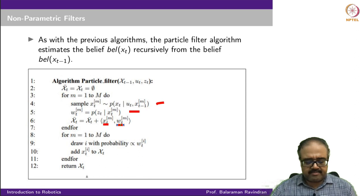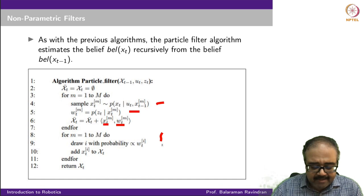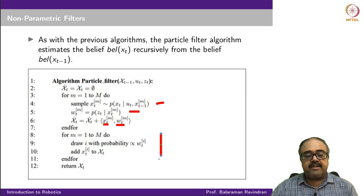To overcome this, we do something called resampling. Lines 8 to 11 of the algorithm implement what is called resampling of the particles. I have M particles each having some weight, and I will resample M particles again — drawing a new set of particles.